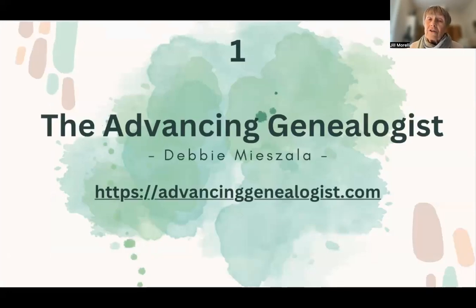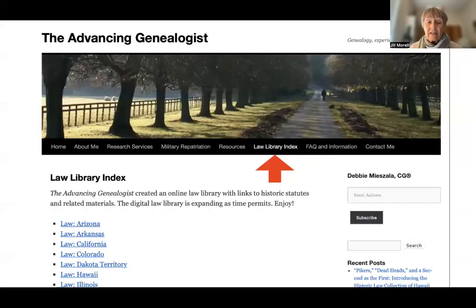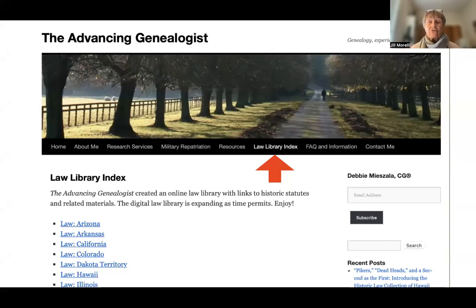The first thing I do is I go to the Advancing Genealogist. Debbie Mazzella has a great website where she outlines state law by state, and I find this particularly helpful. It's under Law Library Index, and you can see over on the left-hand side that it's all done by state. So if I'm looking for Illinois law, I can just go straight to Illinois.